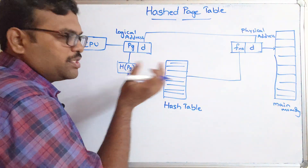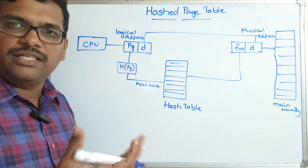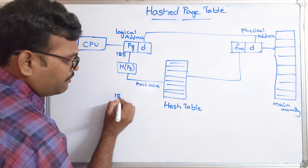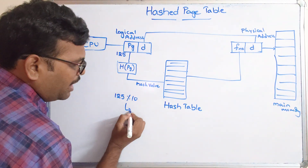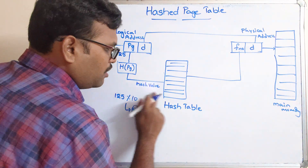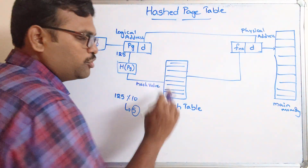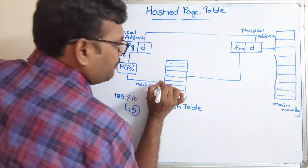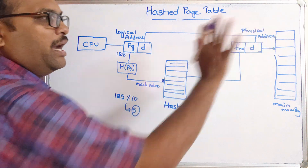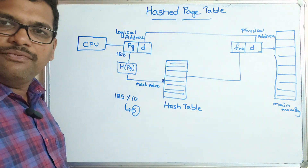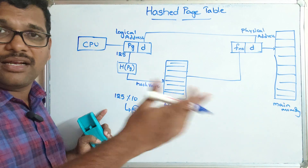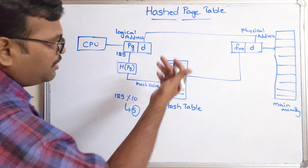After applying the hash function, one method is the division method. For example, if the page number is 125, then 125 mod 10 gives a hash value of 5. This value points to entry 5 in the hash table. At that entry there is a frame number, which is taken and combined with the displacement to get the physical address.